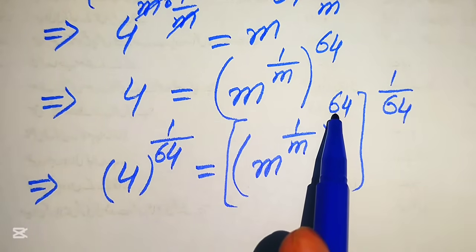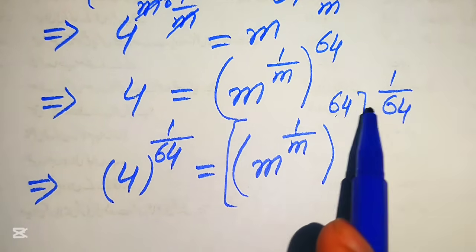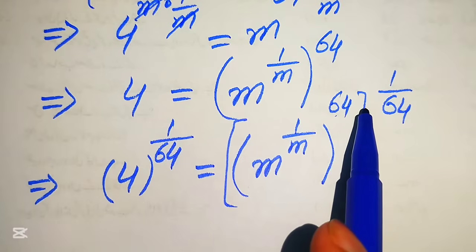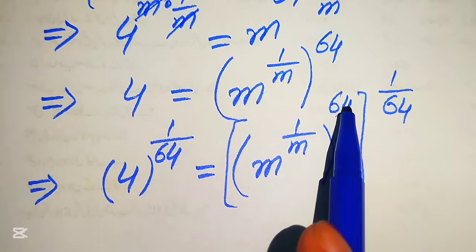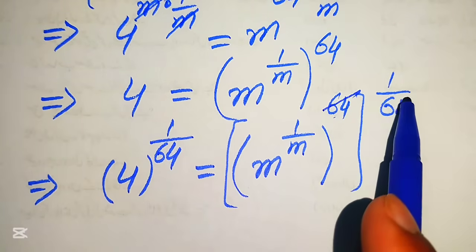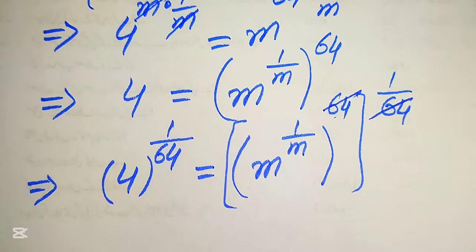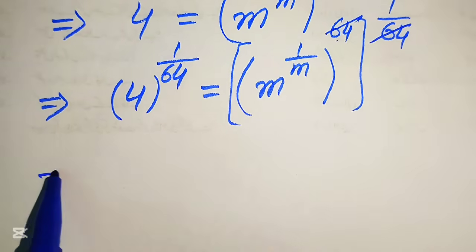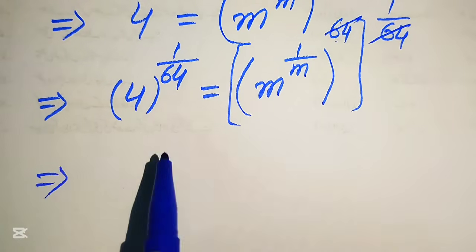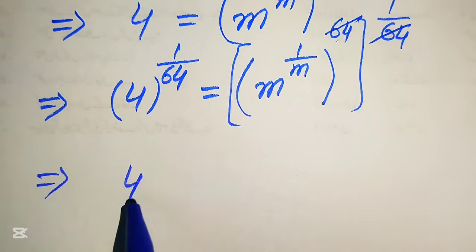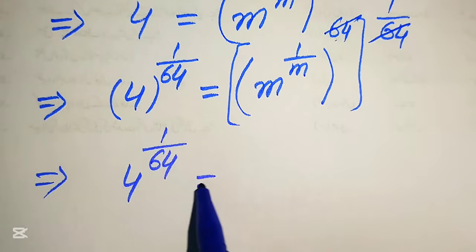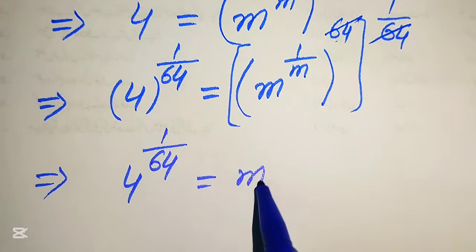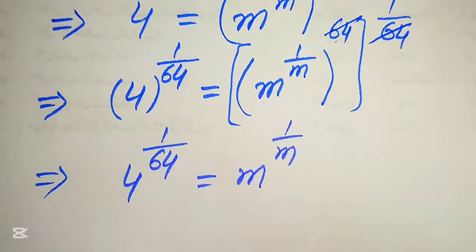Again we multiply the exponents using the exponent law — this 64 is cancelled by the other 64 — and we obtain 4 to the power of 1 over 64 equals m to the power of 1 over m.